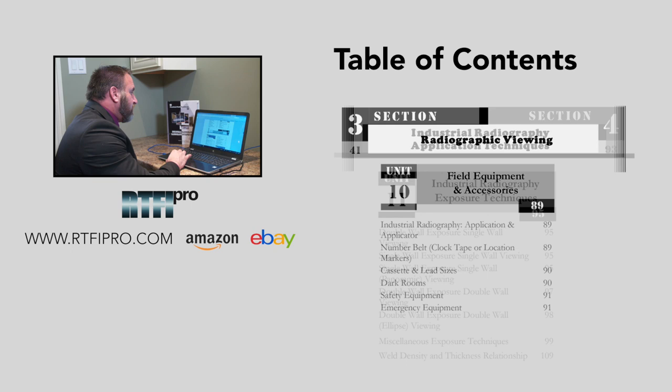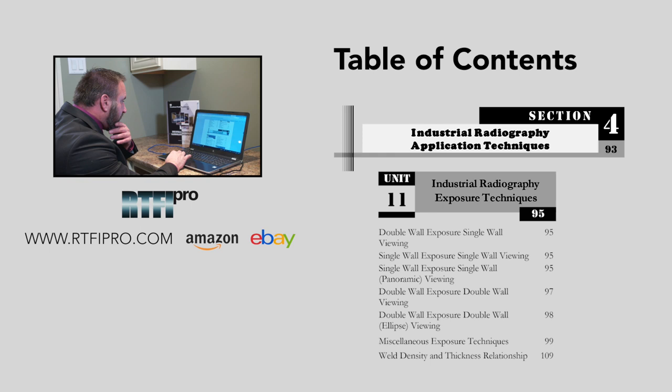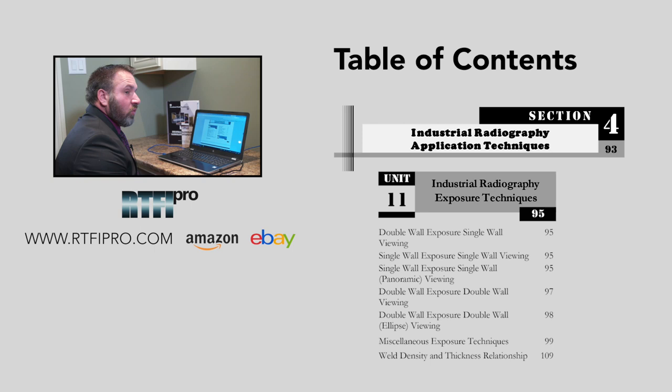We're now addressing section four: industrial radiography application techniques — a big section. Unit eleven covers industrial radiography exposure techniques: double wall exposure single wall viewing, single wall exposure single wall viewing, single wall exposure single wall panoramic viewing, double wall exposure double wall viewing, and double wall exposure double wall ellipse viewing.